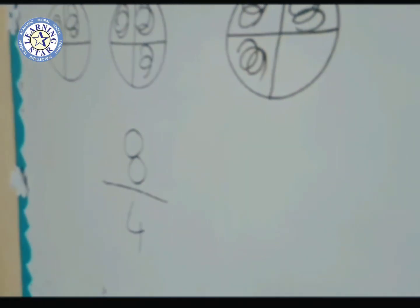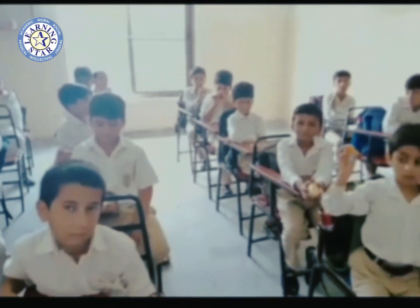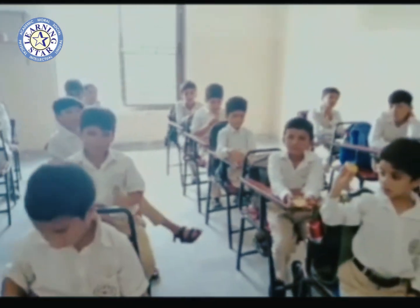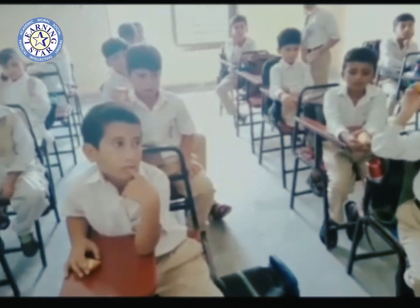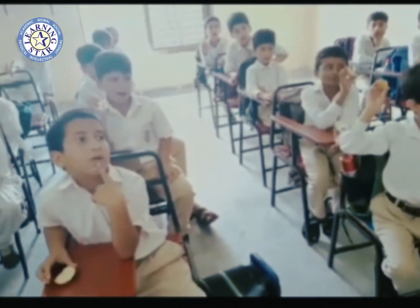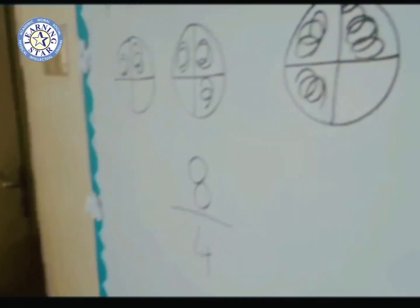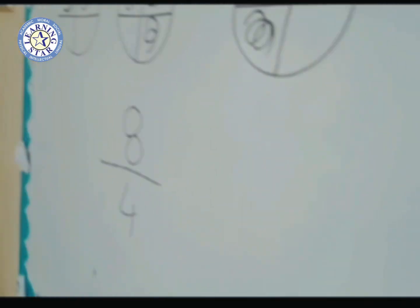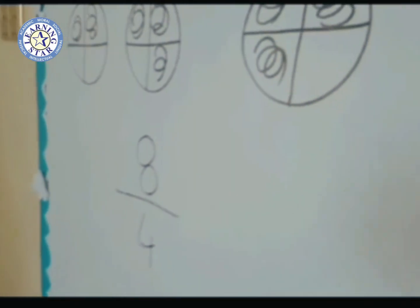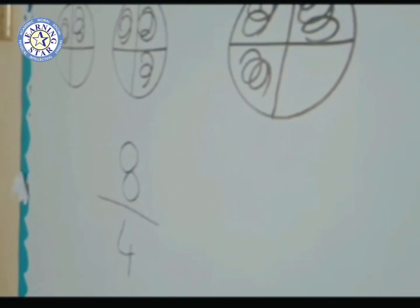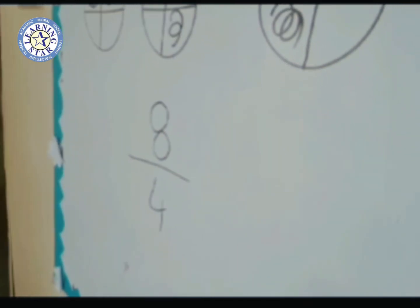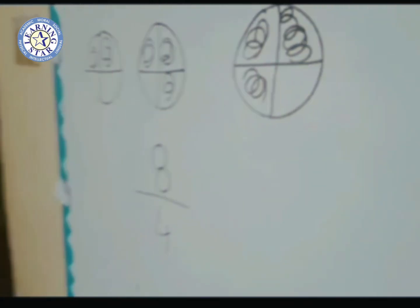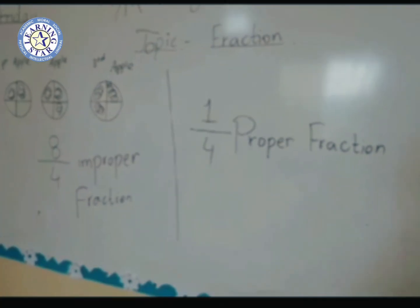I have drawn the first apple, second apple, and third apple here as we distributed. Tell me about the numerator. Eight — well done! And what is the denominator? Four. So eight is the numerator and four is the denominator. The numerator is bigger than the denominator — which type of fraction is that? That is an improper fraction.